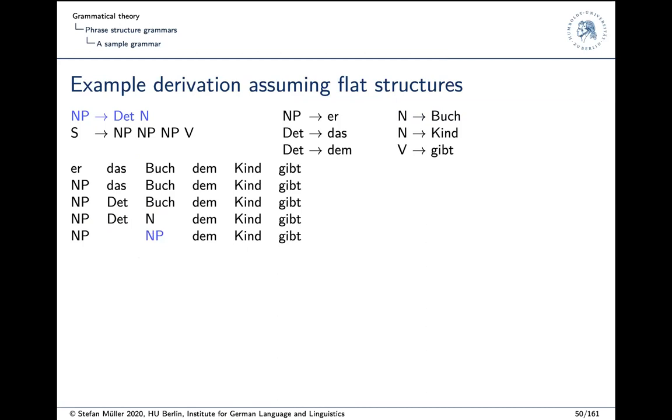So this rule is applied and instead of having two symbols here we have just one symbol standing for a bigger unit. And well the rest is almost boring. 'Dem' is a determiner, 'Kind' is a noun. And again we can combine determiner and noun. We have an NP. And the last thing or almost last thing we can do is look up the verb. So now we have NP, NP, NP and verb. And you see this rule can apply here. And then we have a sentence. Done. Okay. That's cool, right?